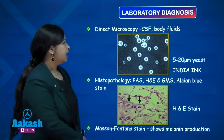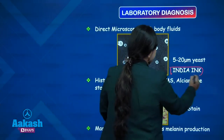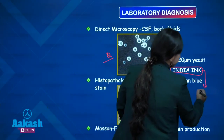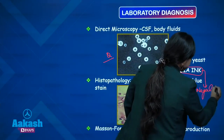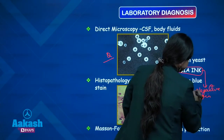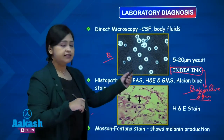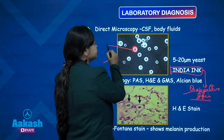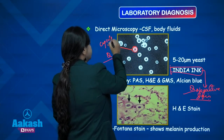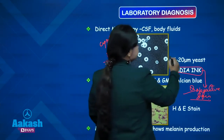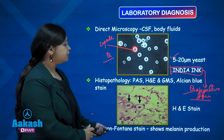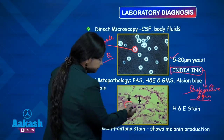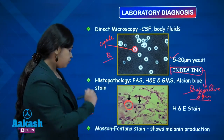Coming to laboratory diagnosis: direct microscopy of CSF with India ink has been asked many times as an image-based question. India ink is an example of a negative stain — this is also an MCQ. India ink means the background is stained and the budding yeast is unstained, with a surrounding halo which represents the capsule. The size is 5 to 20 micrometers. Histopathological staining with PAS, H&E, and GMS shows a similar image — the yeast cell with a large surrounding unstained halo representing the capsule.